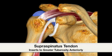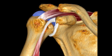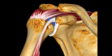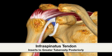Illustrated next is the supraspinatus tendon as it attaches to the greater tuberosity at the anterior portion. Posteriorly, the infraspinatus tendon wraps around the posterior surface of the humeral head to attach to the remainder of the greater tuberosity's lateral and posterior margins.